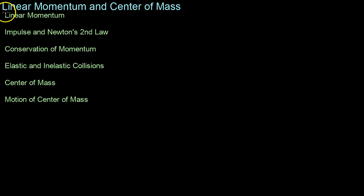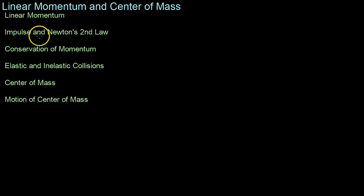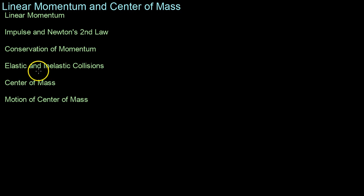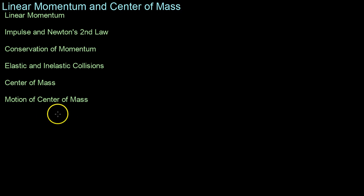This will be our first video in a series looking at Chapter 6 of the Barron's Book of AP Physics, dealing with linear momentum and center of mass. Specifically, we're going to be covering linear momentum and its definition, how it relates to Newton's law and what impulse is, the conservation of momentum, elastic and inelastic collisions, and the center of mass and how it moves.